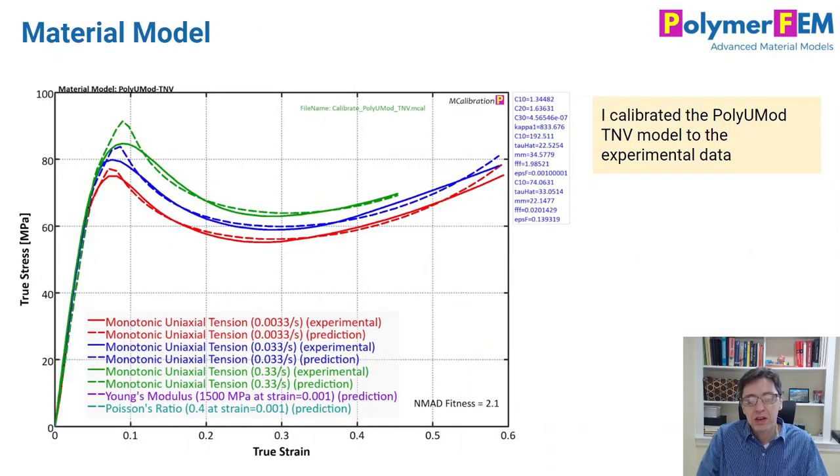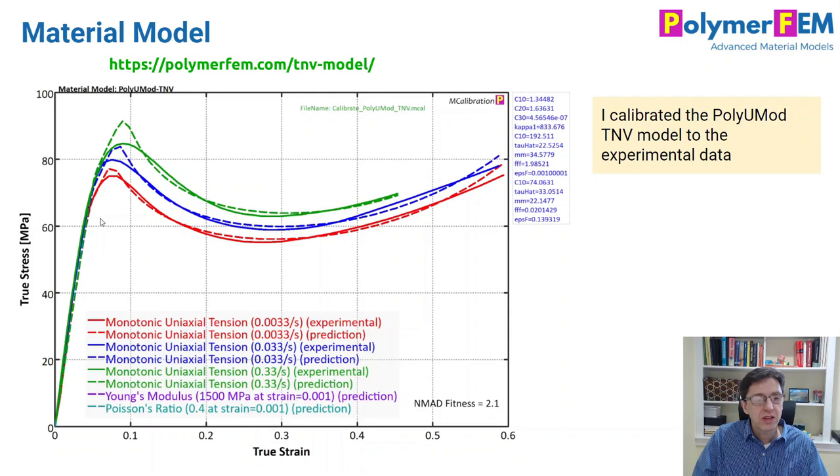So I calibrated this material model. It's a PolyUMod TNV model and the dash lines are the predictions from this model. The accuracy of the model predictions is about two percent so it's a very accurate representation of the experimental data that we have available.